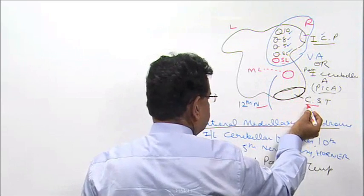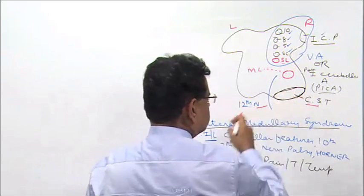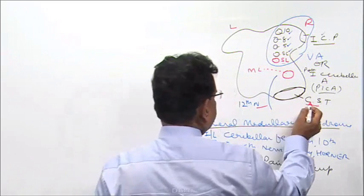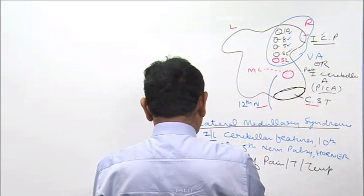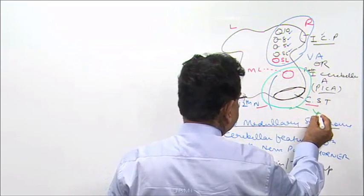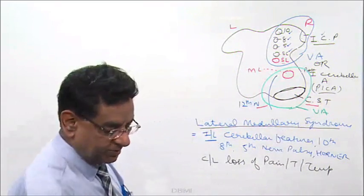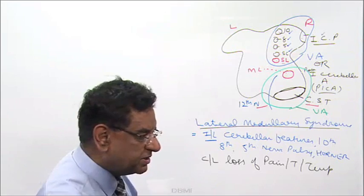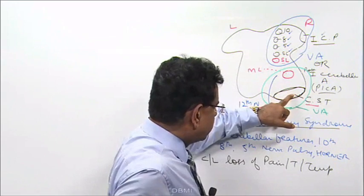The medial lemniscus contains contralateral position and vibration sense. This is the right-sided corticospinal tract, right-sided medial lemniscus, and the right twelfth nerve. This part of the brain is supplied by another branch of the vertebral artery.